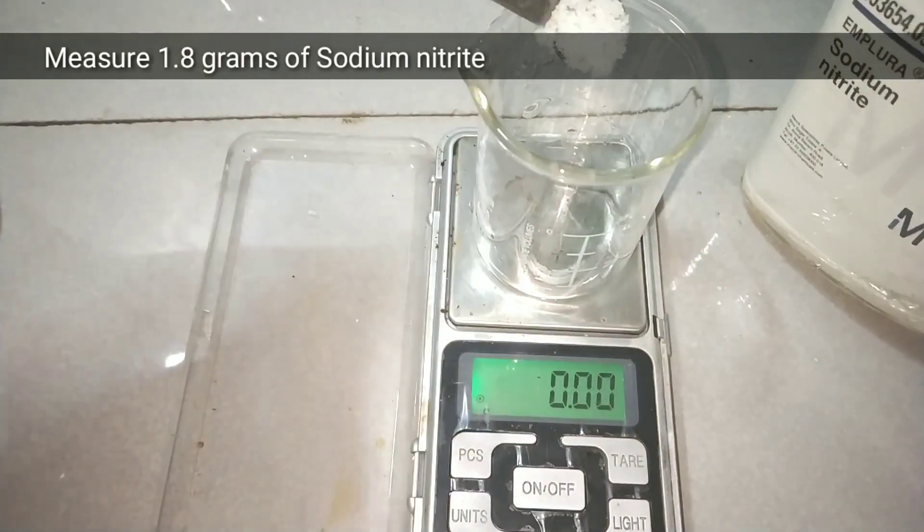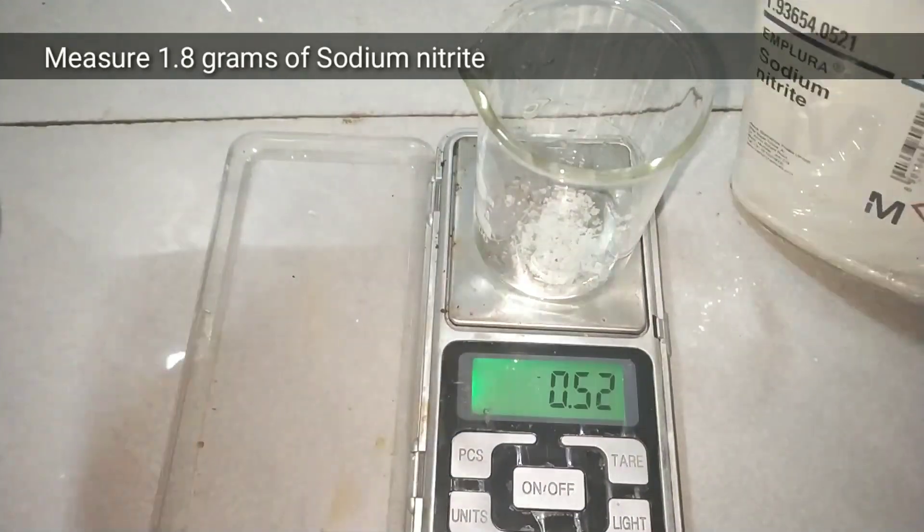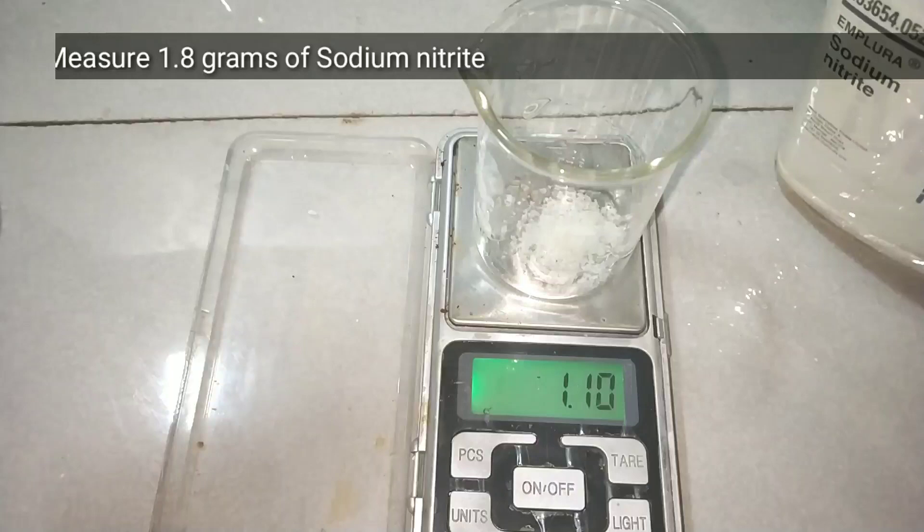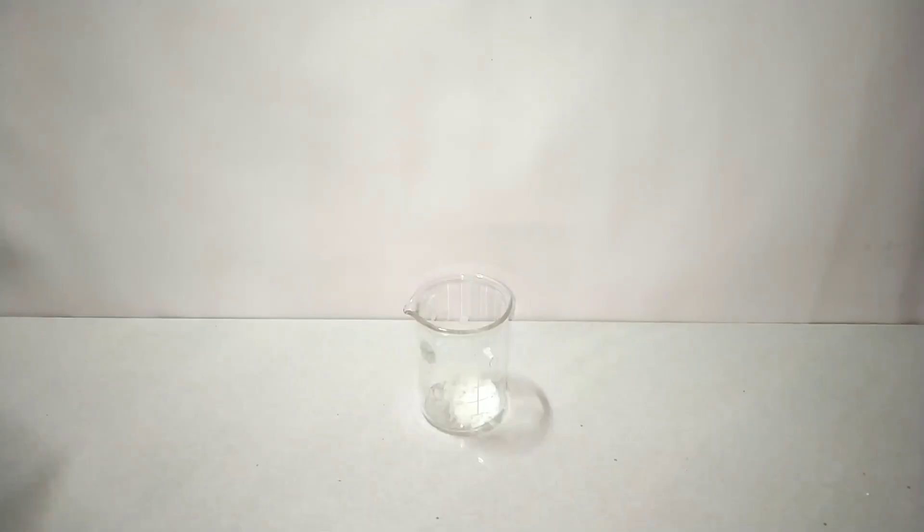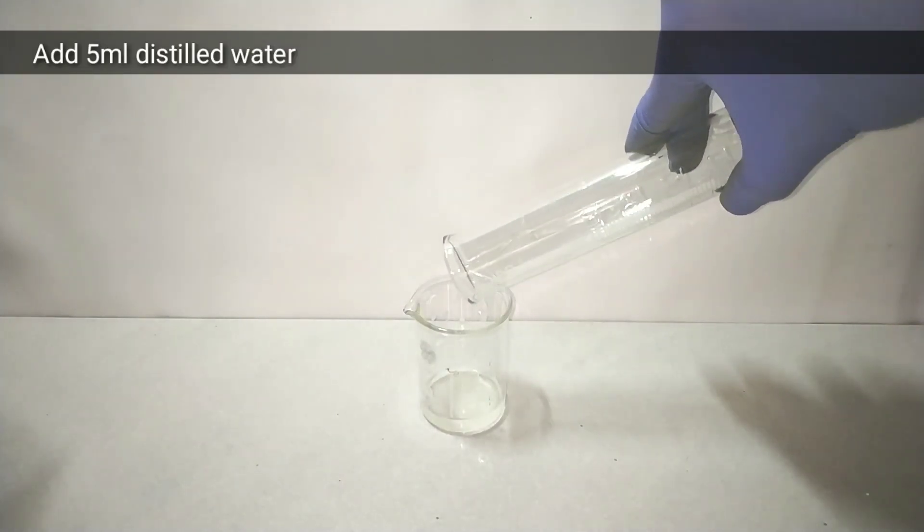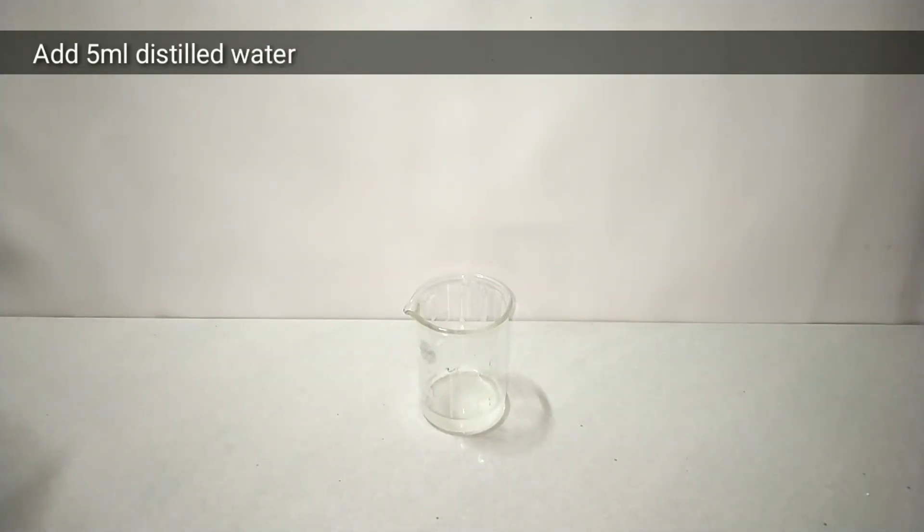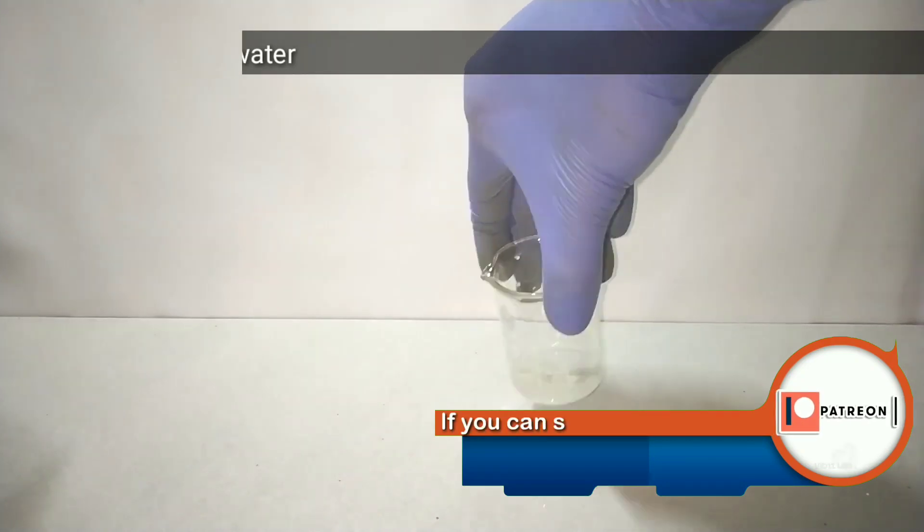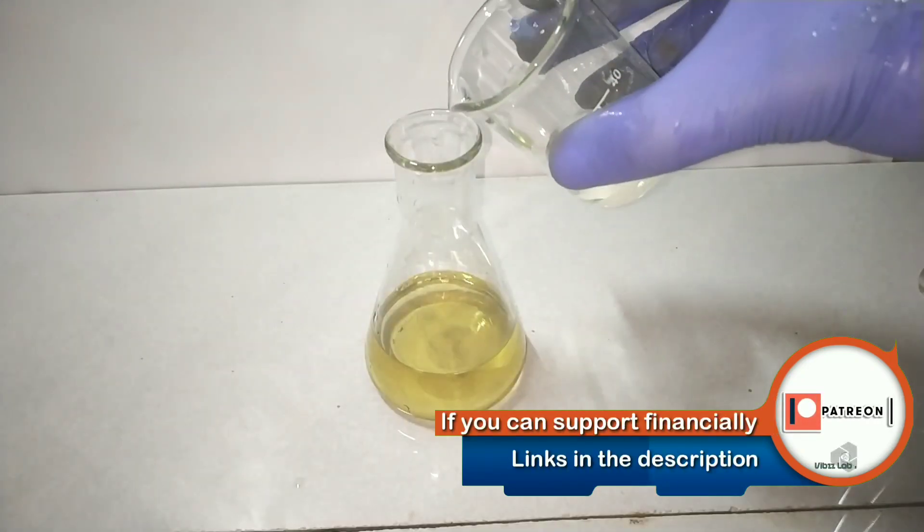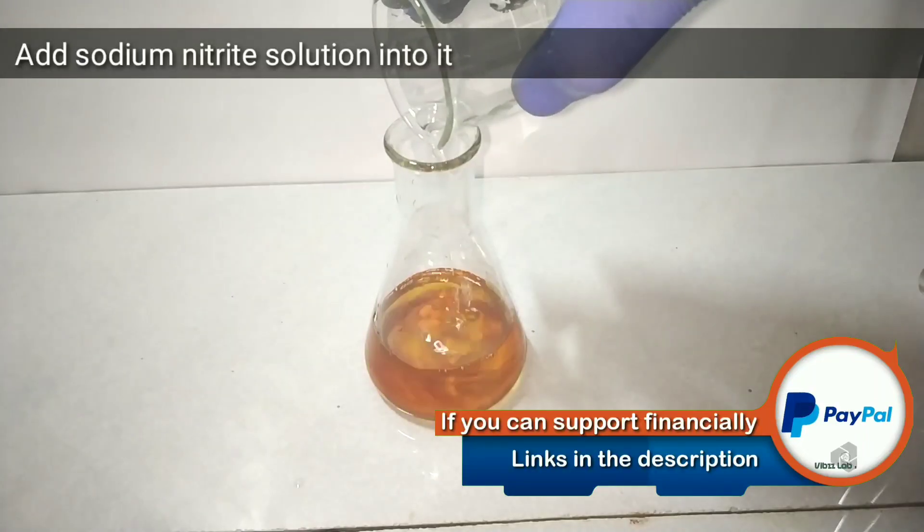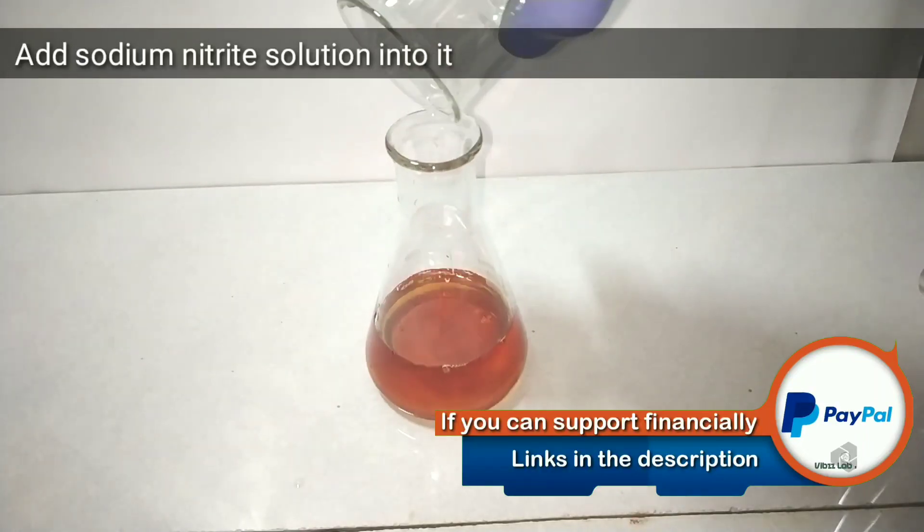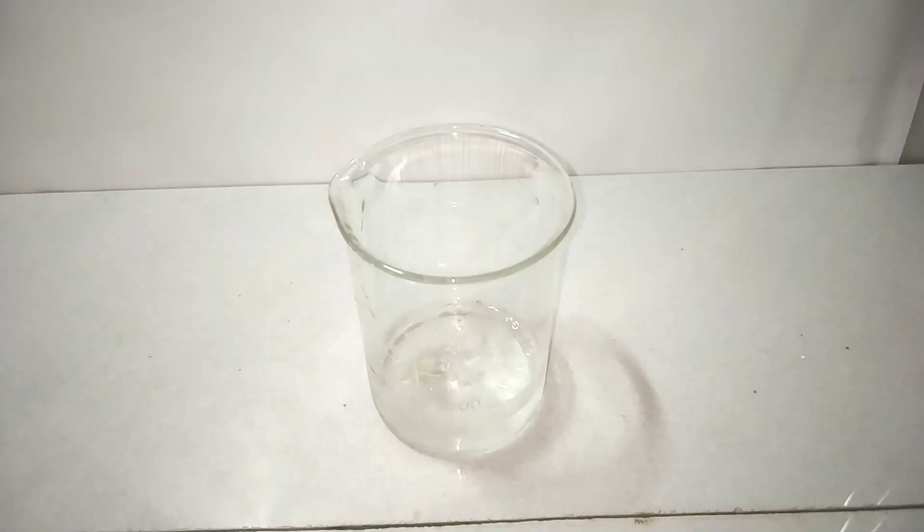Now we measure out 1.8 grams of sodium nitrite. It is sodium nitrite NaNO2 and not nitrate. Into that add 5 ml of distilled water and mix to make a solution. This sodium nitrite solution we add into the previously boiled and cooled solution of sulfanilic acid and sodium carbonate.